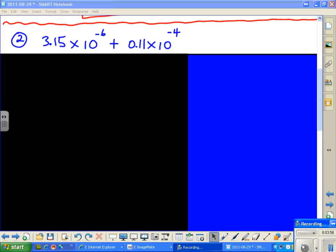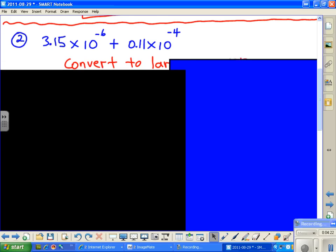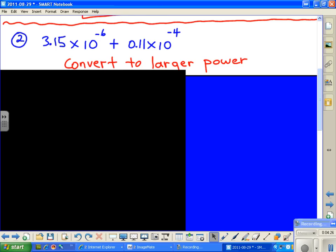In our second problem, we're going to use different powers of 10. That requires that we get one of them in the other form. Basically, I'm going to take that 0.11 times 10 to the minus 4 and change it to 10 to the minus 6. That's converting the larger power of 10. Let's go down and see how that's done.